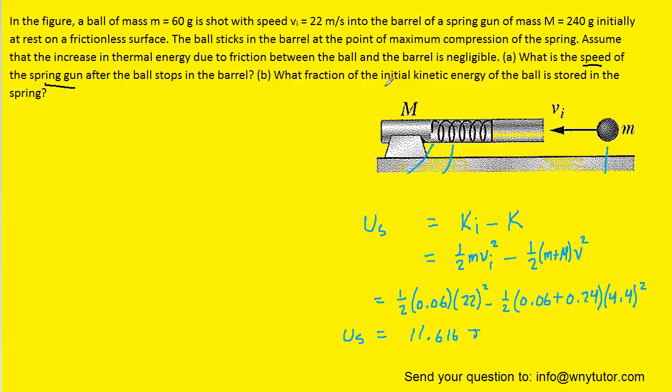The question wants the fraction of the initial kinetic energy stored in the spring. So to get that fraction we can take the energy stored in the spring and simply divide it by the initial kinetic energy. Now we just figured out the elastic potential energy so we can plug that into the numerator.